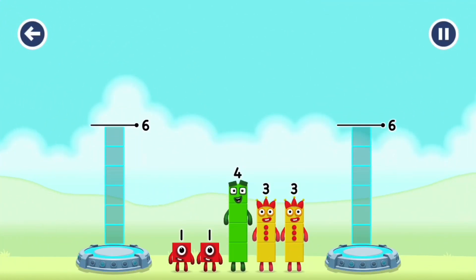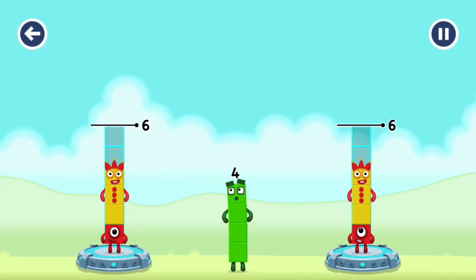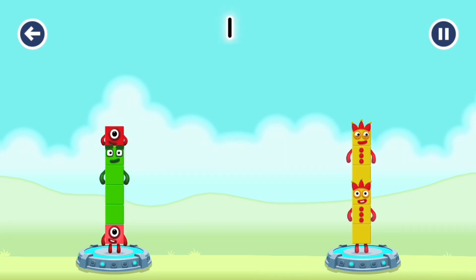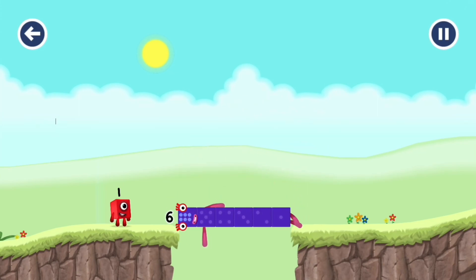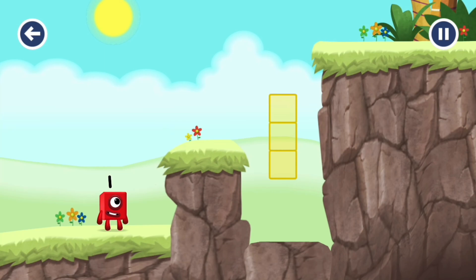3. Share the number blocks evenly to make 2 groups of 6. 1, 1, 1, 1, 3. 3, 3, 4. 4, 4, 3, 3. 3. 1. You got it! 1, 1 plus 4, 4 plus 1 equals 6. 3 plus 3 equals 6. 6 equals 6. 6, 6. Well done! Well done!